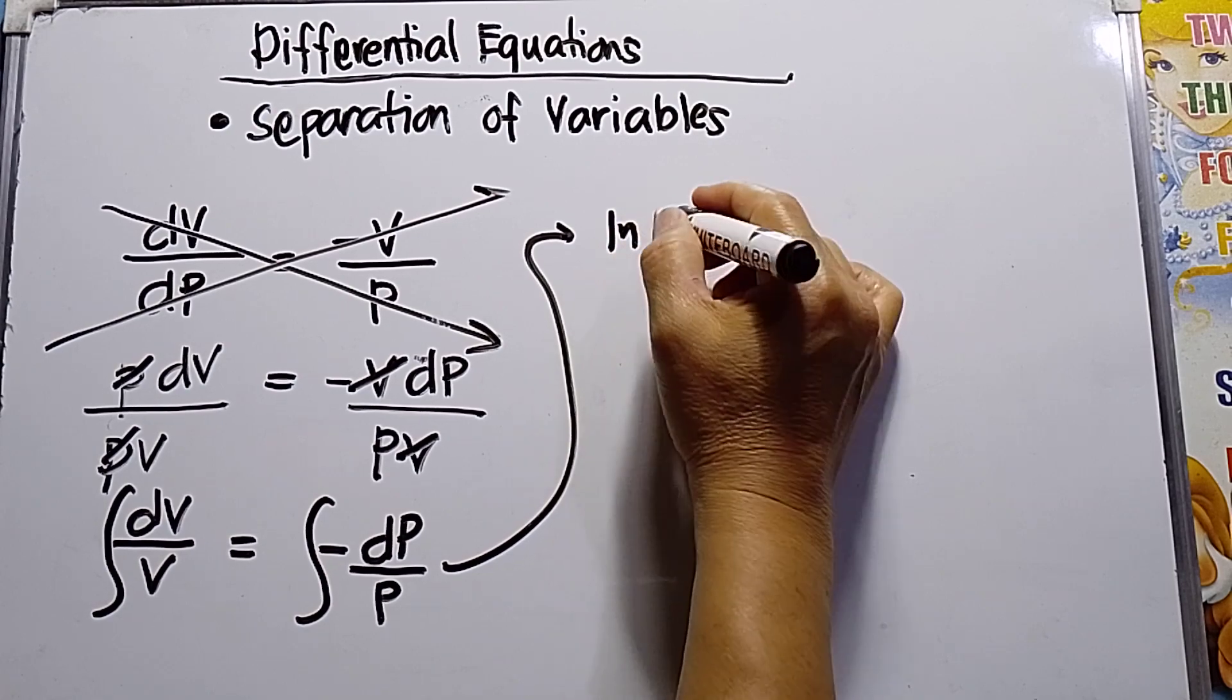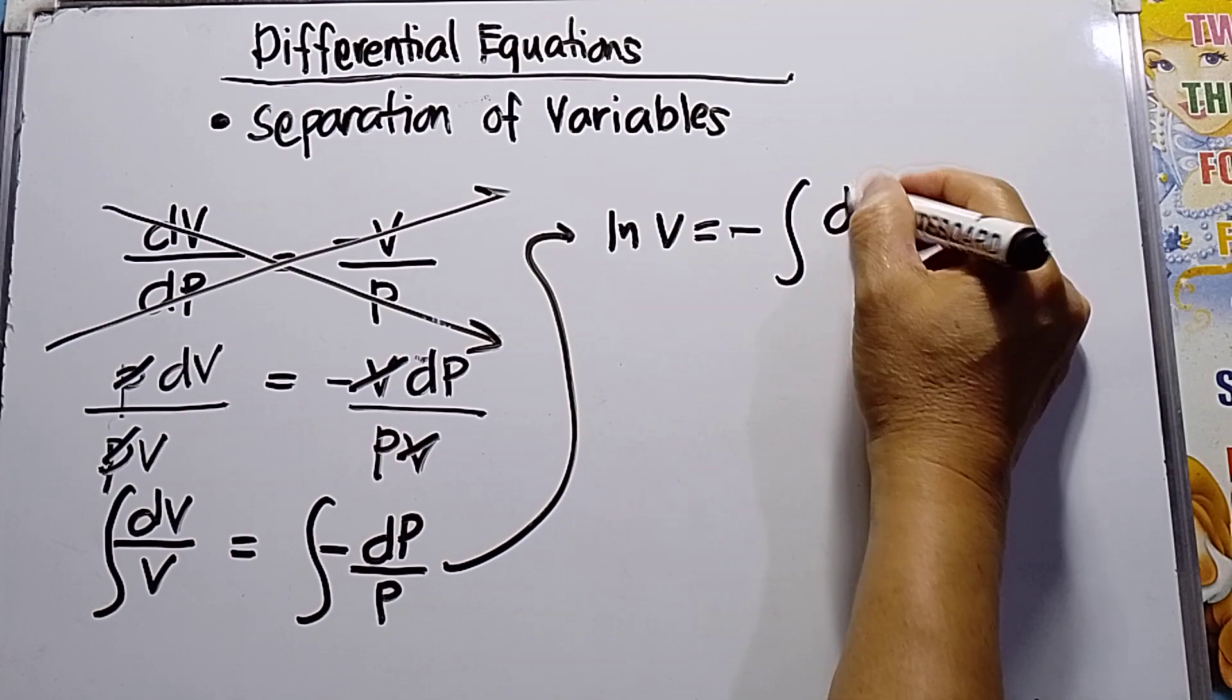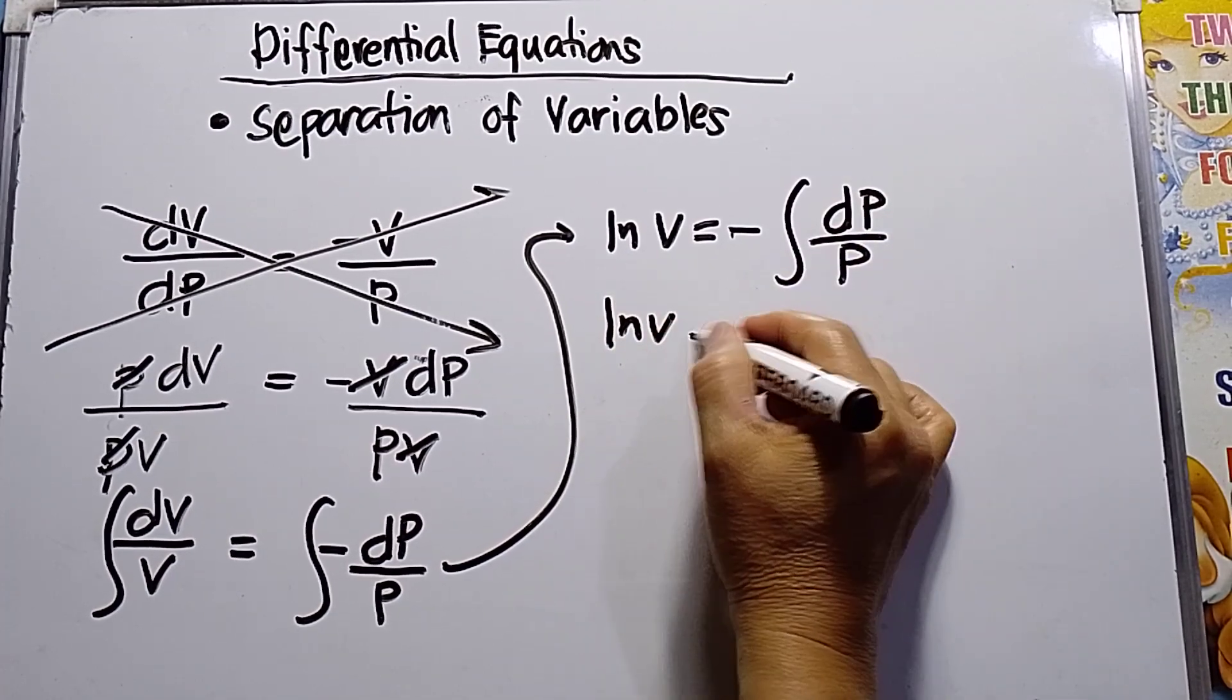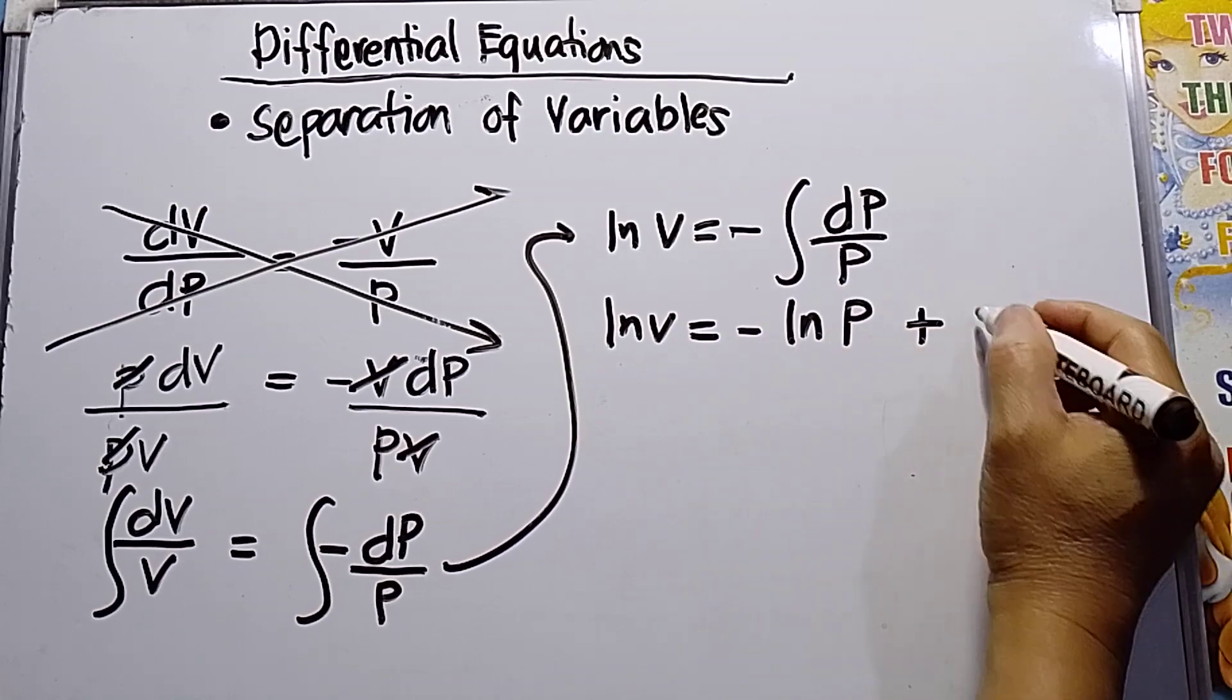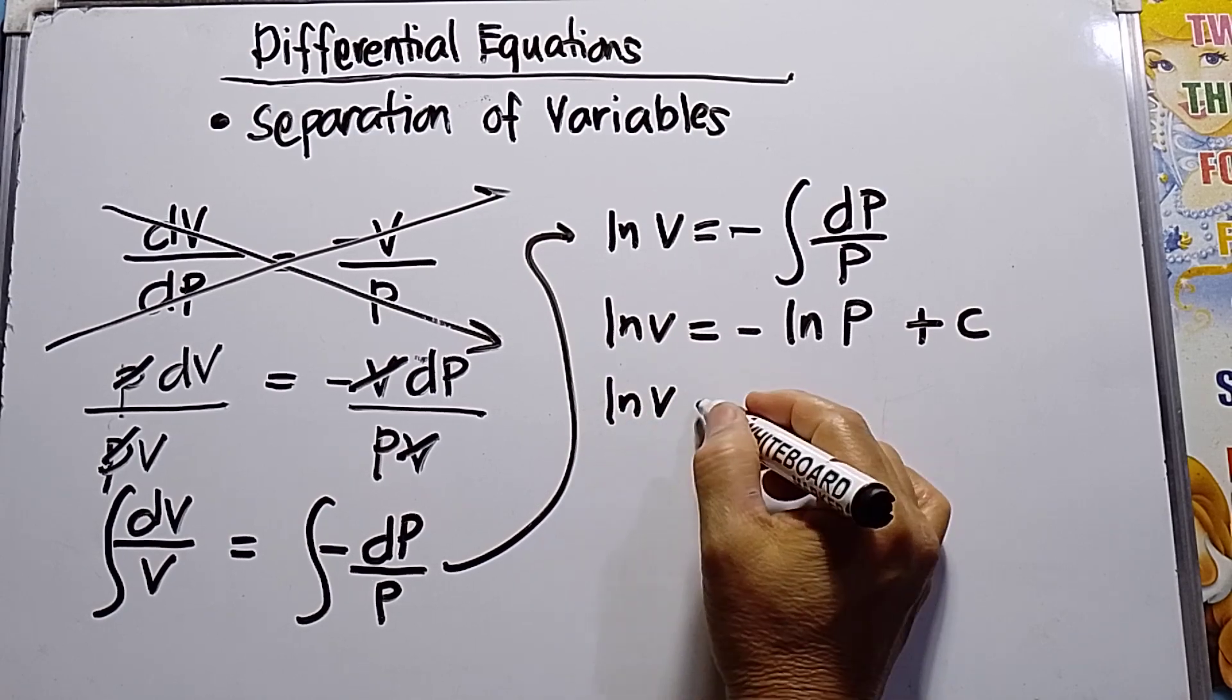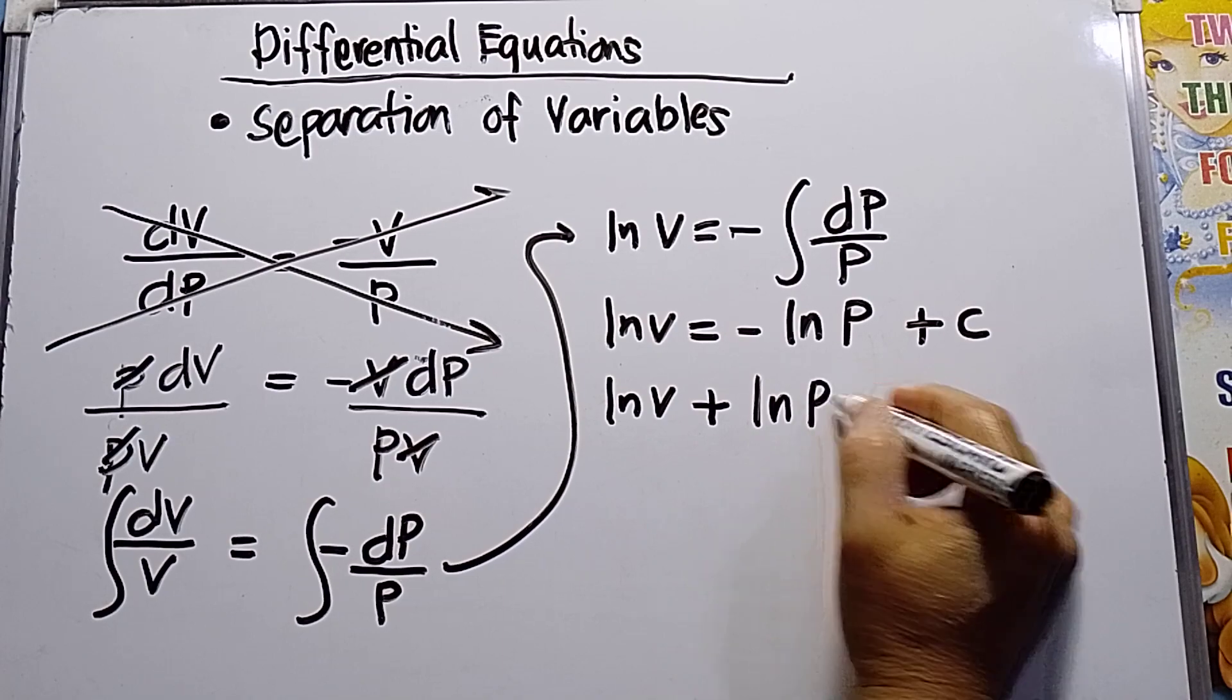This will be ln V is equal to minus integral dP over P. So ln V is equal to minus ln P plus C. So this will be ln V plus, because transpose, ln P is equals to C.